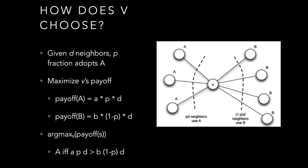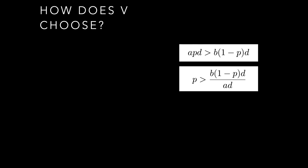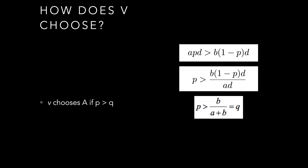We can simplify: I'll choose option A if and only if A times P times D is greater than B times (1 minus P) times D. Simplifying this inequality gives us: P is greater than B divided by (A plus B). So the only time I'll choose option A is if the fraction of friends who have chosen option A is greater than the payoff of B over the total payoff. We rewrite B over (A plus B) as Q, giving us a new parameter, and we can start asking questions about this graph.